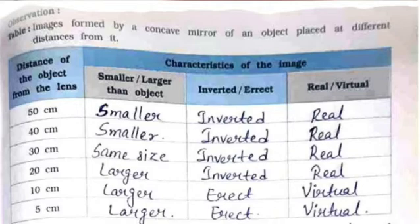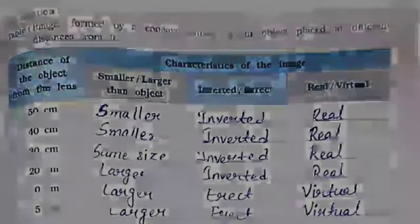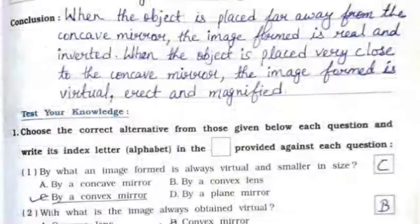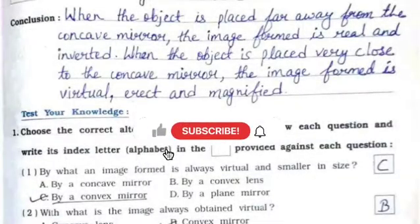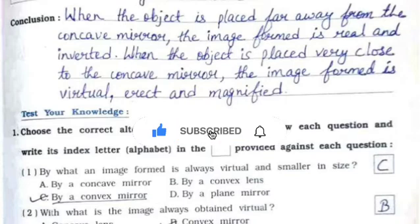For the observations, the distances of the object from the mirror are already given. You need to write the characteristics of the image — whether it is small or large, whether it is inverted or erect, and whether it is real or virtual. The conclusion is: when the object is placed far away from the concave mirror, the image formed is real and inverted.